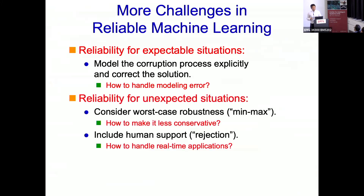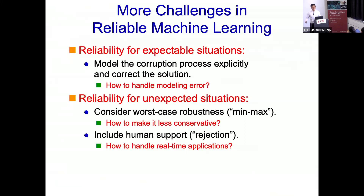A completely different approach is reliability for unexpected situations — the typical situation being the minimax game, where we consider worst-case robustness. We don't assume anything specific about noise, but assume something extreme can happen, and we consider the worst-case scenario and minimize the loss — a minimax solution. This is sometimes mathematically solvable and theoretically attractive, but in practice the solution is often too conservative. For example, in robot control via reinforcement learning, the robot might simply not move at all, because any movement carries a risk of breakdown — so doing nothing is the minimax-optimal solution.